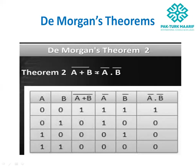De Morgan's second theorem: (A+B) complement is equal to A complement dot B complement. In other words, (X+Y)' = X'·Y'. There are two variables A and B, so possible combinations are four: 0 0, 0 1, 1 0, 1 1. Evaluating (A+B)': 0+0=0, complement gives 1; 0+1=1, complement gives 0; 1+0=1, complement gives 0; 1+1=1, complement gives 0.